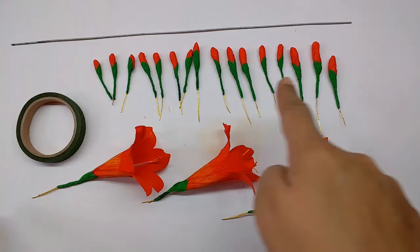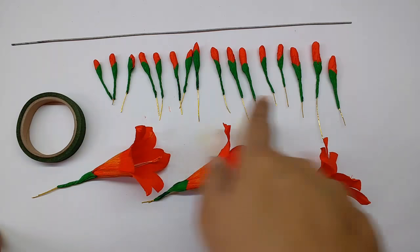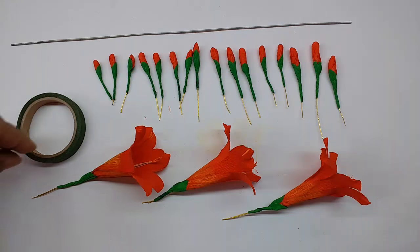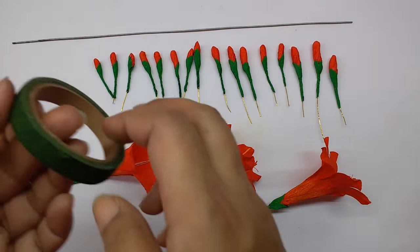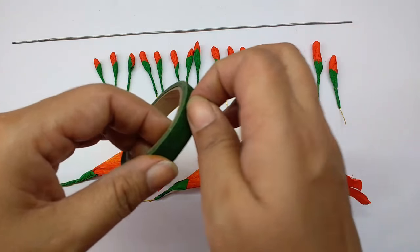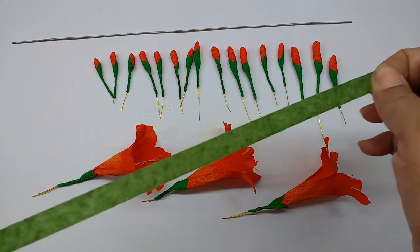Now I have made buds in different sizes, almost about 15 or 16 of these and about 3 flowers. Now take the green floral tape and cut out a long piece from it.